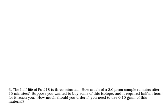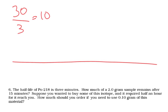Okay, this is part two of the question. Suppose you wanted to buy some of this isotope and it requires half an hour to reach you, which is 30 minutes. How much should you order so that you get to use 0.1 grams of the material? Well, each half-life is three minutes. So we're going to have to go through 10 half-lives. Now, on the 10th half-life, we want 0.1 grams. So what I need to do is go backwards.